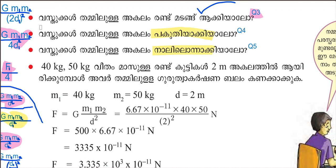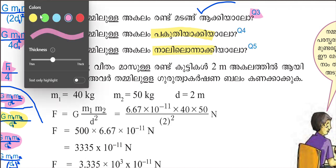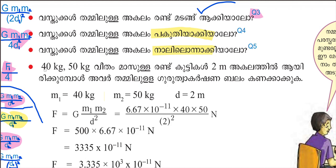I'll show you the problem. I have a question. The answer is as follows: m1 equals 40 kg, m2 equals 50 kg, and the distance d equals 2 meters. This is the example, and I will show you the same thing.